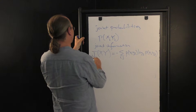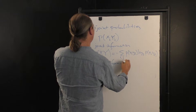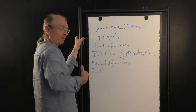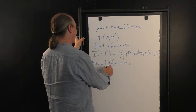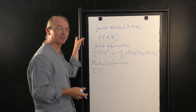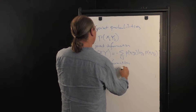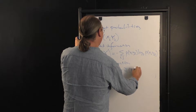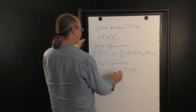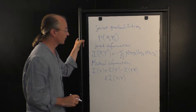I defined something called mutual information. Mutual information is the information in X on its own — the amount of information you get if you look at variable X. If it's a binary variable, like a coin flip, it could be up to one bit. Plus the information in Y, minus the joint information I(X,Y). This sum of individual informations minus the joint information is defined to be the mutual information, designated I(X:Y).